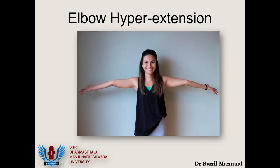Sometimes we see hyperextension of the elbow, very commonly in children and adolescent women. My favorite test is to make the patient abduct both shoulders so you get a beautiful view of the symmetry of both elbows. If one elbow is hyperextended compared to the other, there is probably a problem. If both elbows are symmetrically hyperextended, that is perfectly normal for that patient — it may not be normal compared to your elbow, but it is normal for them.